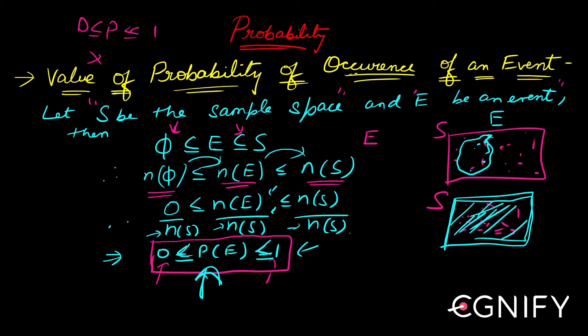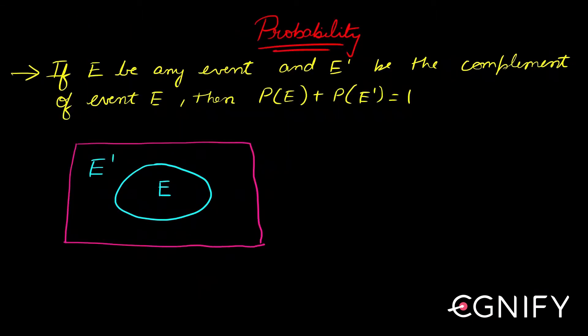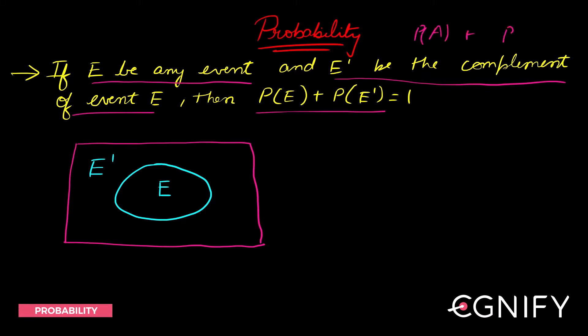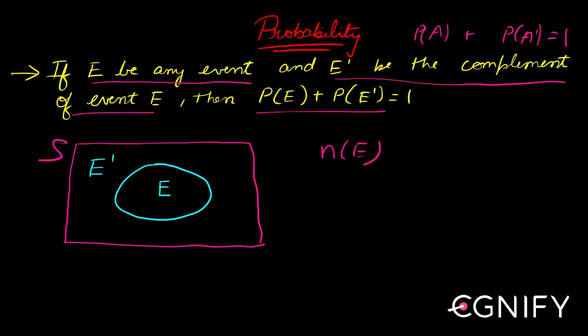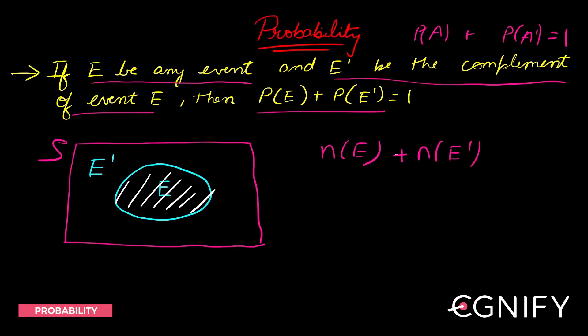Let's prove the identity: if E is any event and E' is the complement of E, then P(E) + P(E') = 1. This means if you take any event, find its probability, and add the probability of its complement, the result should be 1. Let S be your sample space and E your event. n(E) accounts for all outcomes lying inside E.